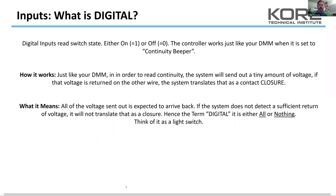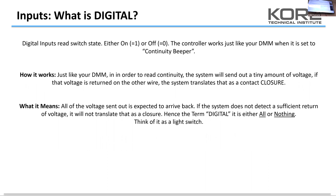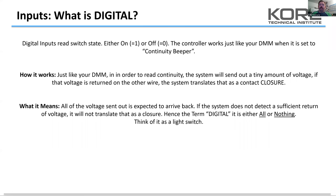We'll start with digital because there is some confusion, especially when you're first getting into the control side of things. A digital input is basically an on or off state. In terms of digits, on is a one and off is a zero — that's where we get the term 'digital.' Think of it like your meter's continuity beeper: if the meter is quiet it's open, and when it beeps it indicates a short.